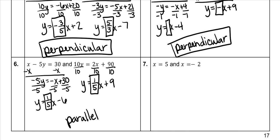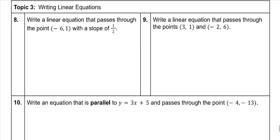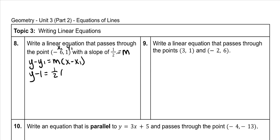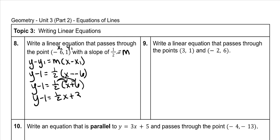Both of these have undefined slopes, but because they are both the same, they are also parallel. Next, write a linear equation through a given point with a given slope. The given slope is m, the given point is x1 and y1, so we use point-slope form. Plugging in: y minus 1 equals 1 half times (x minus negative 6), which becomes y minus 1 equals 1 half x plus 6. Distribute the 1 half to get 1 half x plus 3, then add 1 to both sides: y equals 1 half x plus 4.